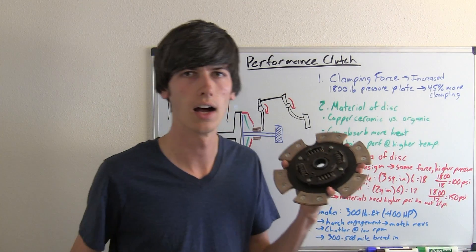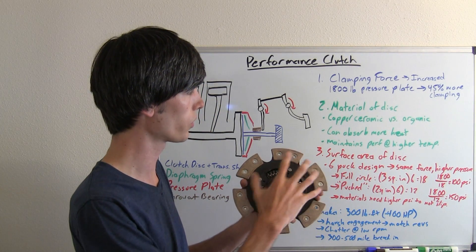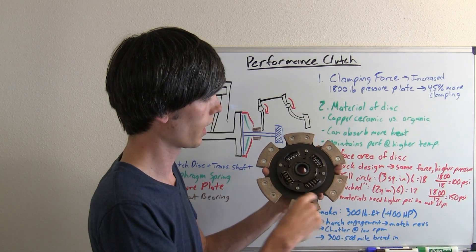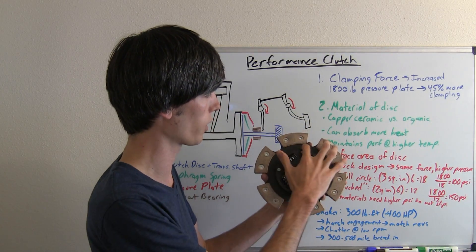And the final thing you're going to look at on a performance clutch is it's going to reduce the surface area of the disc. So you'll see here that it's got these pucks, six of these pucks and different styles will have a different amount.